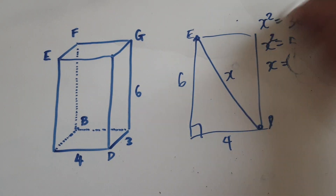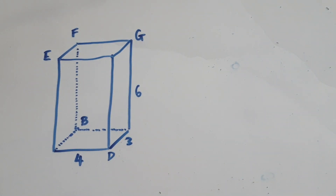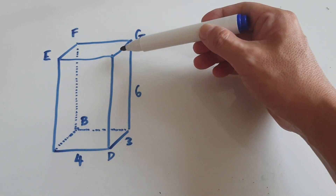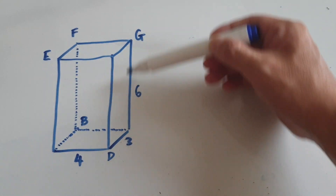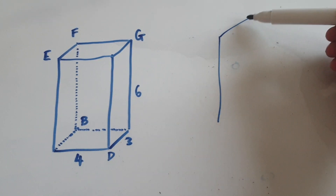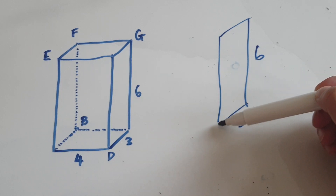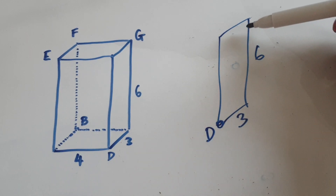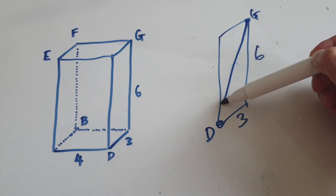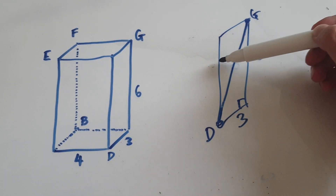And then if you want to find DG — D is here, G is here. So you have to look at this long, tall rectangle. This is 6, this is 3. D is here and G is here. You're trying to find this length here, DG. So here you've got a right-angled triangle — use Pythagoras again.